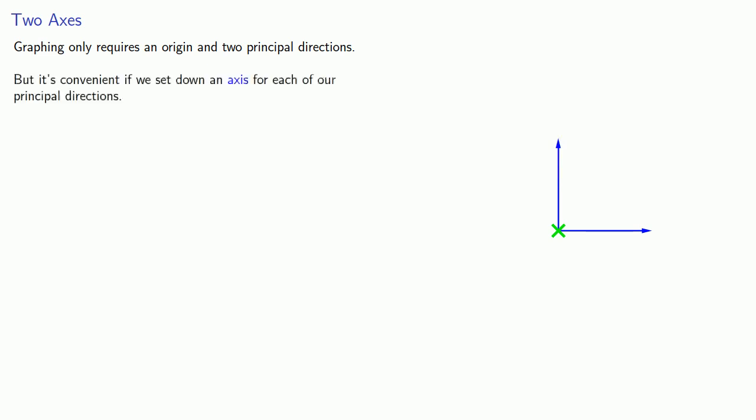Graphing only requires an origin and two principal directions. You need to know where you're starting and what directions you're going in. But it's sometimes convenient if we set down an axis for each of our principal directions to serve as a reminder of the directions that we should be traveling in. Now an important idea is that we're not actually traveling along the axes. Rather the axes tell us which directions we should be moving in.